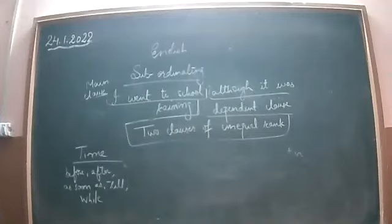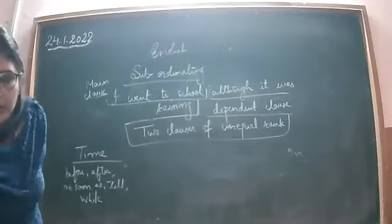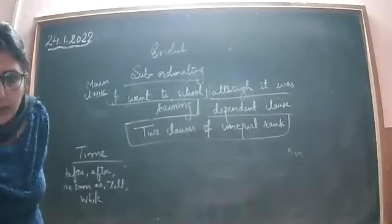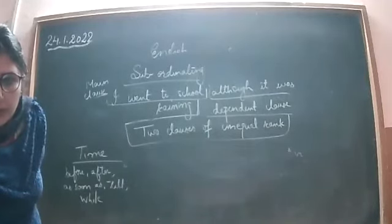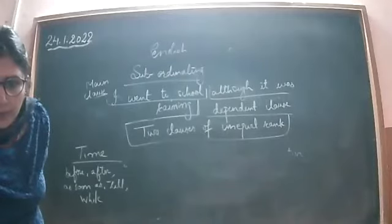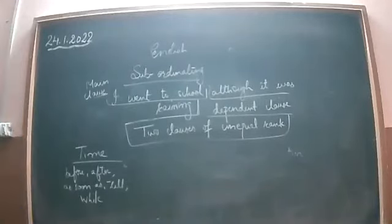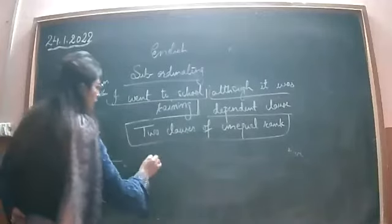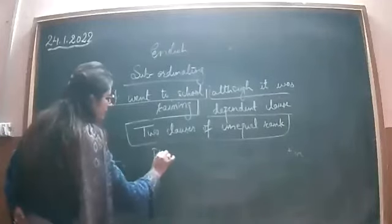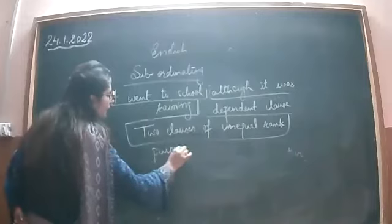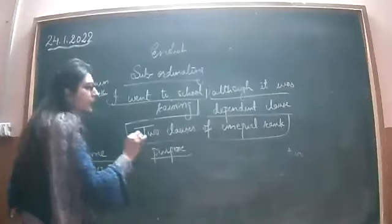Next are subordinating conjunctions of purpose. These tell us the purpose of an action — why we are doing something. For example, 'so that': 'We eat food so that we can live.'